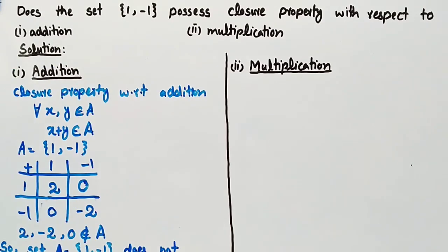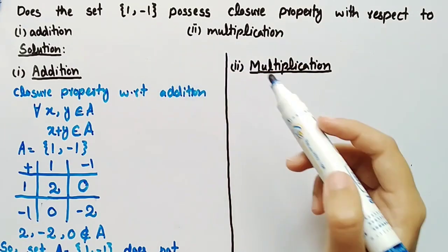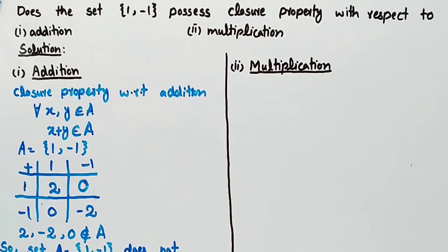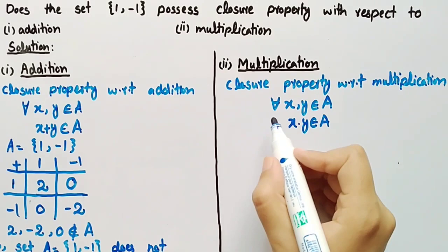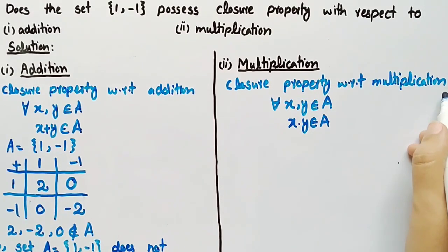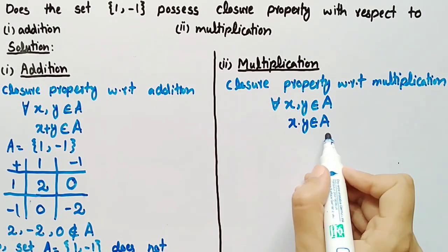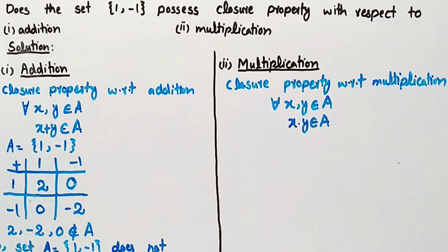Now we will check whether the set {1, -1} possesses closure property with respect to multiplication or not. The definition of closure property with respect to multiplication is: for all x, y belonging to set A, x · y also belongs to set A. It means that when we take the product of each element one by one with each other element of the set, and that product belongs to the set itself, then we can say that the set is closed with respect to multiplication.